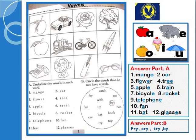Baccho aapne isi tarah vowels ko underline karna hai. Next part hai: circle the words that do not have vowels. Ab aapne baccho next pe unko circle karna hai jisme vowels use nahi ho raha. Jaise first agar dekhen toh catch hai — C, A, T, C, H — toh A hai, isme vowel hai toh isko nahi karenge. Next mein fry — usko circle karenge, bilkul usme vowel nahi hai. Next hai with — I use hai. Eat mein E aur A dono use ho raha hai, nahi karenge. Fan ko bhi nahi karenge, up ko bhi nahi karenge. By ko yes karenge.